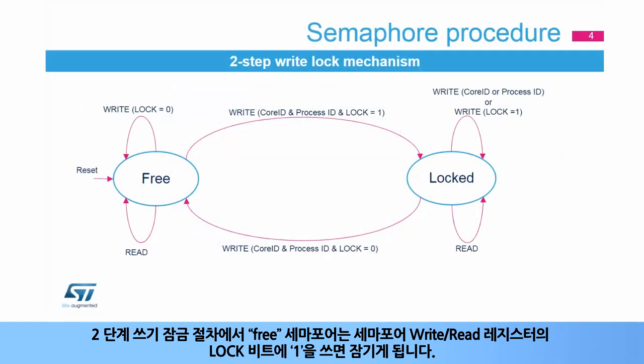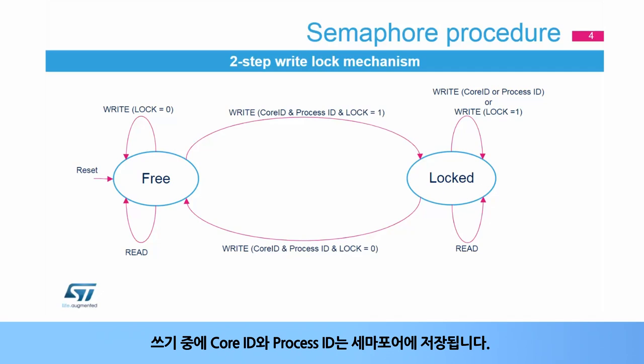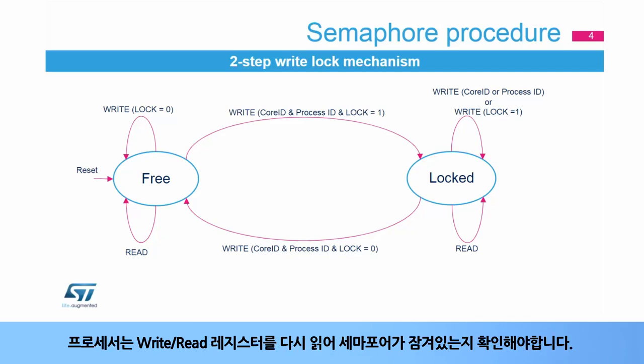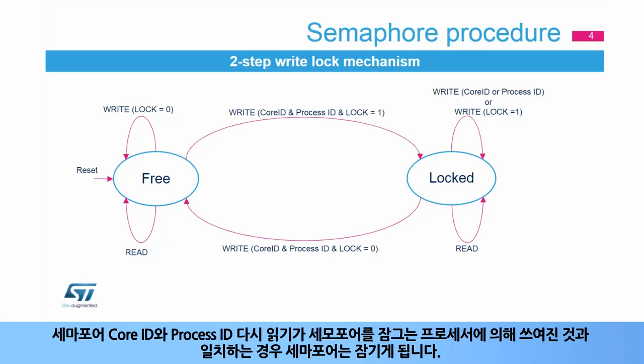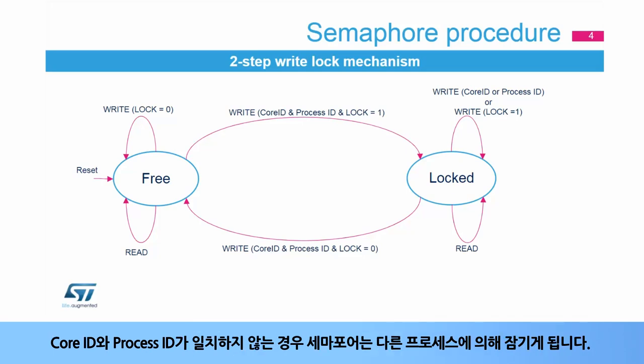In the two-step write-lock procedure, a free semaphore will be locked by writing 1 to the lock bit in the semaphore write-read register. The core ID and process ID used during the write will be stored in the semaphore. A process has to check that the semaphore is locked by it by reading back the write-read register. If the read-back semaphore core ID and process ID matches the one written by the process locking the semaphore, it is locked by it. If the core ID or process ID doesn't match, the semaphore has been locked by another process.